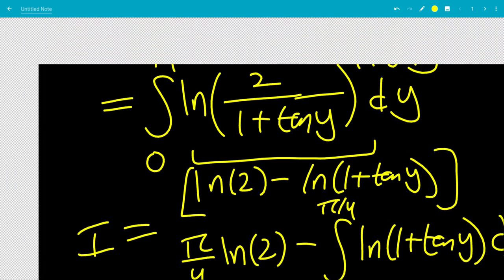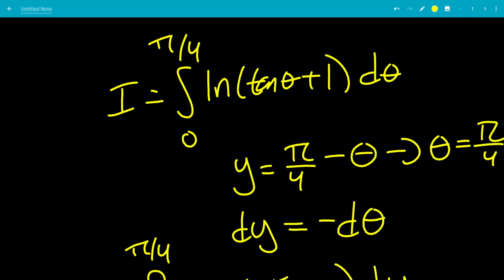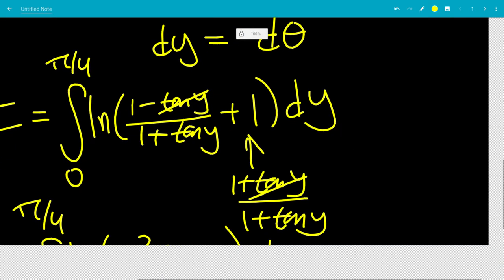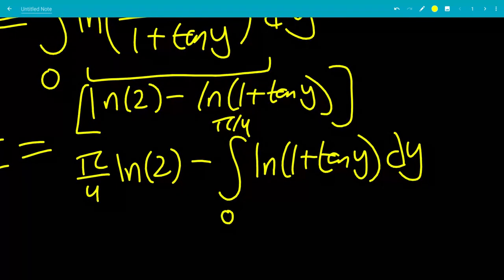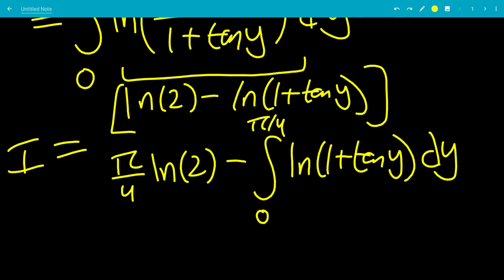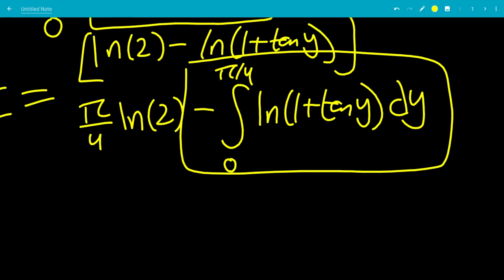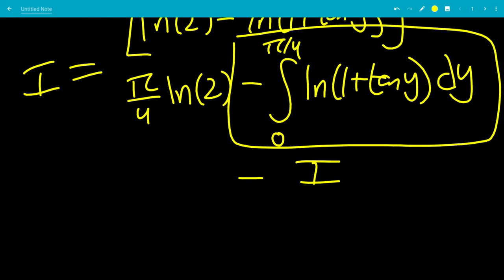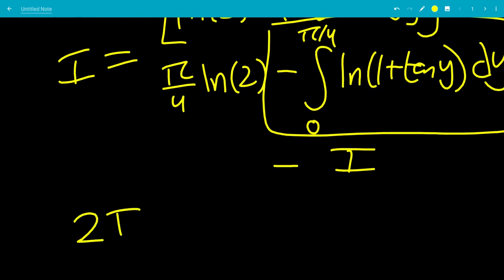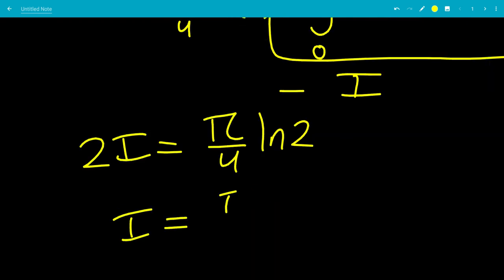The remaining integral from 0 to pi over 4 of ln(1 + tan y) d y is exactly i — the same integral we started with, just with variable y instead of theta. So we have i = (pi/4) · ln 2 minus i, which gives 2i = (pi/4) · ln 2, and therefore i equals pi over 8 times ln 2.